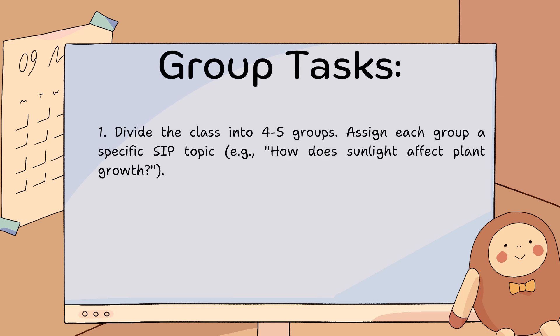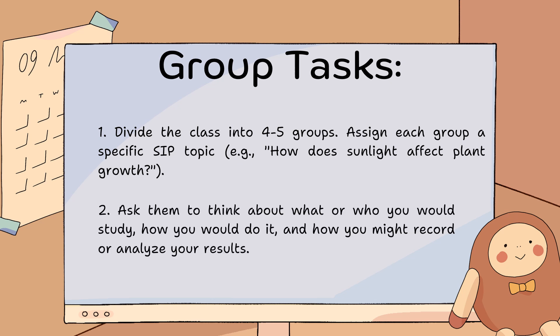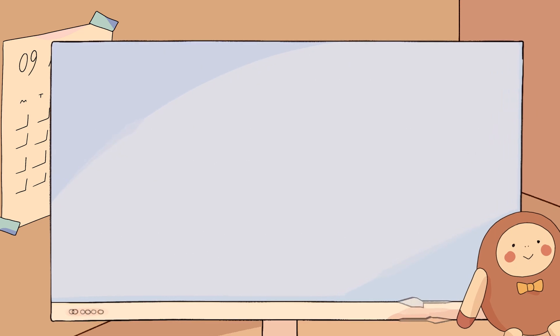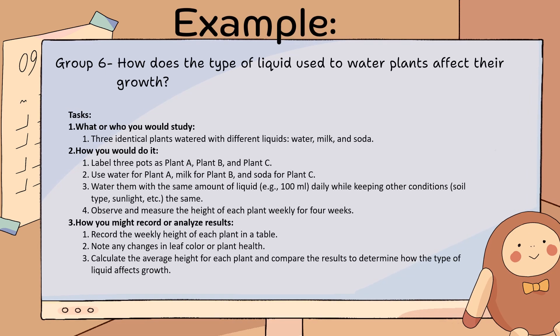Group tasks: the class will divide into four to five groups, each group assigned a specific SIP topic — for example, how does sunlight affect plant growth? You will be asked to think about what or who you would study, how you would do it, and how you might record or analyze your results. You can refer to the provided example on how to do the activity.